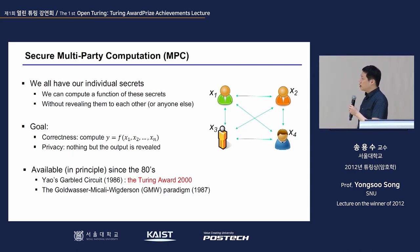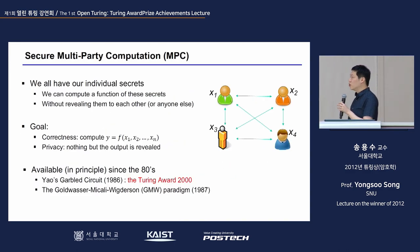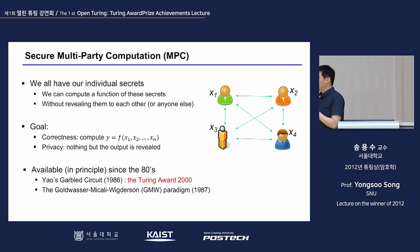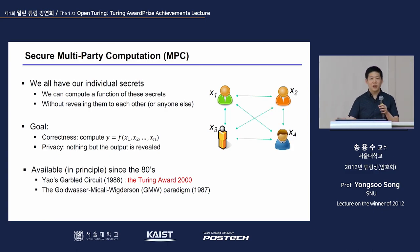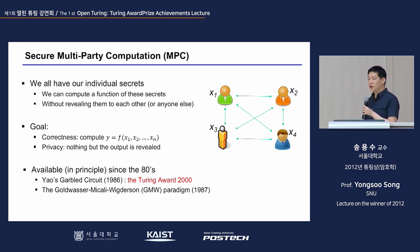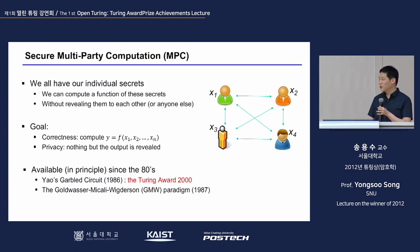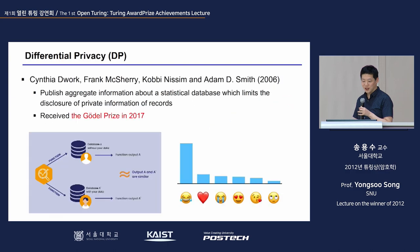The next technology is MPC — secure multi-party computation. Several parties want to perform a computation together but each wants to share only certain information while keeping other information private. Yao introduced the garbled circuit construction, which was a side contribution when he received the Turing Award. Goldwasser and Micali also contributed the GMW protocol, producing important papers in this area.